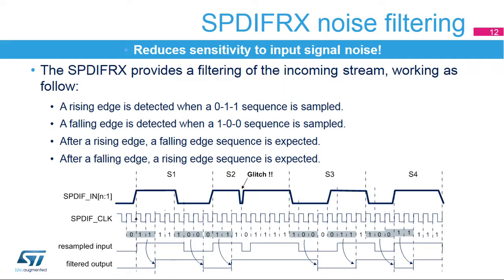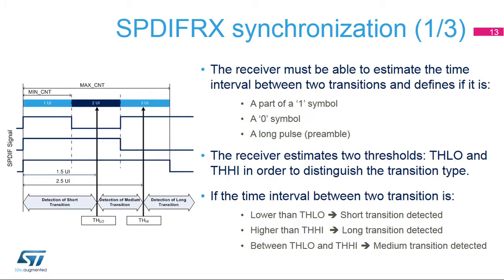The SPDIF-RX is able to suppress glitches, increasing reception reliability. In order to decode the incoming stream, the SPDIF-RX estimates the duration of one UI and defines two thresholds: the low threshold TH-low, fixed to 1.5 UI, and the high threshold TH-high, fixed to 2.5 UI.